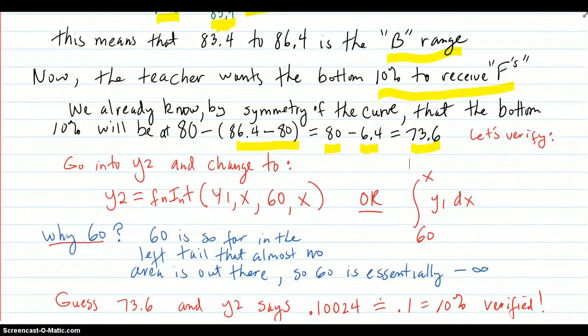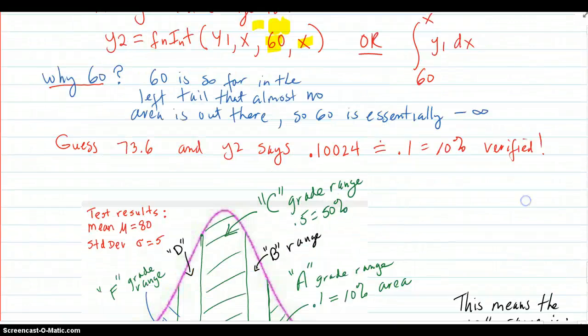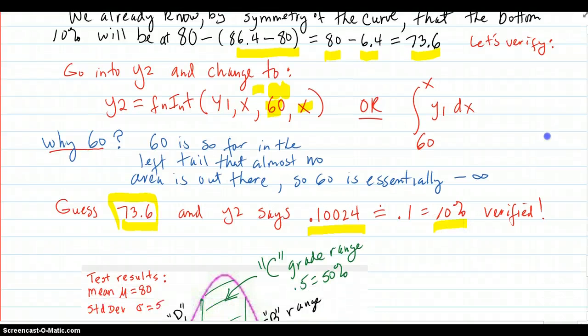Then, I went to Y2 and verify that. I changed it to go from 60 up to X. Now, 60 is essentially negative infinity. Because, that's four standard deviations below the mean, where there's hardly any area beyond there. So, 60 is acting like negative infinity. And then, we're going up to X. And, we want that to turn out to be 10% down there. Okay, so, we checked that in to the calculator. We put the 73.6, guess that in second table. And, the Y2 indeed says .10024, close enough. That's 10% verified. So, then, here is the entire story.